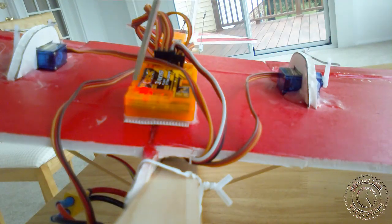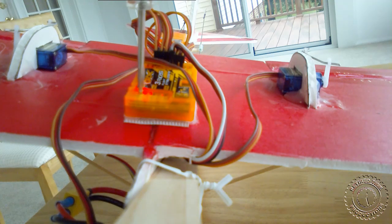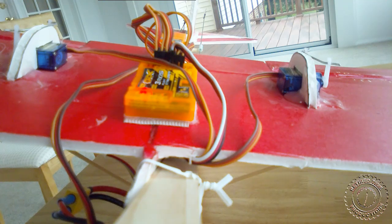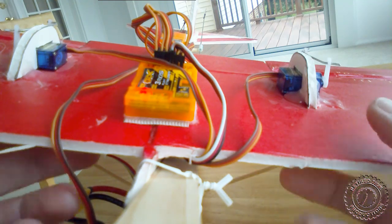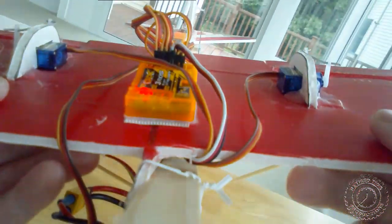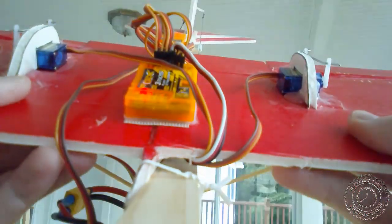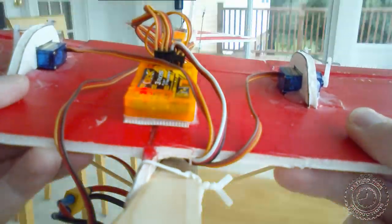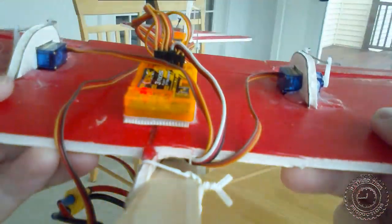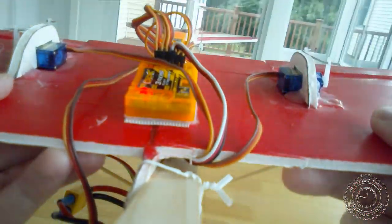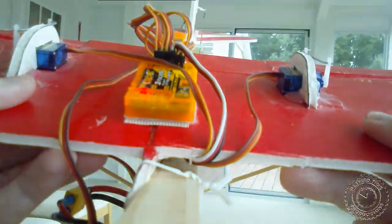Right now I have the gain pots turned all the way down, fully counterclockwise, and you can see there's virtually nothing going on. If I roll the plane, pitch it, or yaw, there's no response from the stabilizer at all.